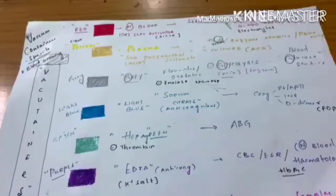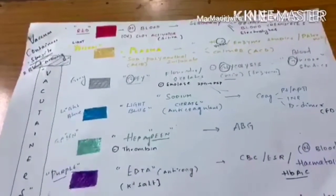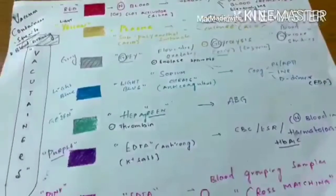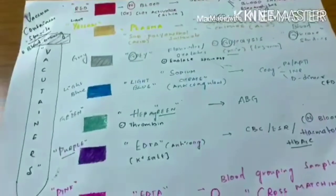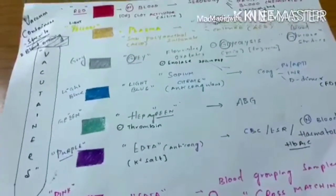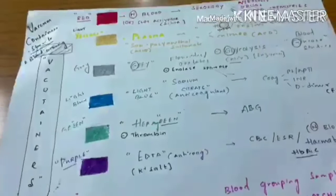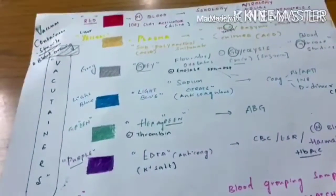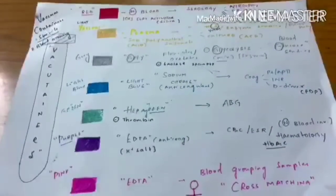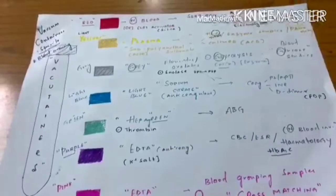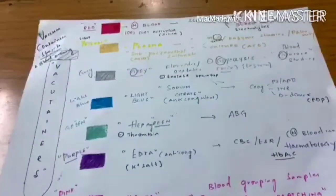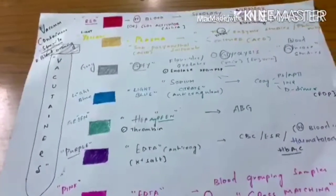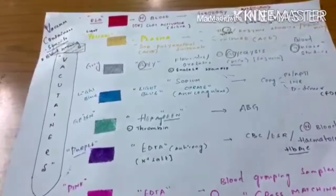Vacutainers are nothing but vacuum containers. This vacuum helps in drawing blood and also maintaining the sample sterile. So these vacutainers are divided into different colors based on the additives added into the bottles. These additives help in both preserving the specimen and stabilizing the values we need. Here we divide the memory part into three parts: remembering the color, remembering the substance in it, and the use of it.